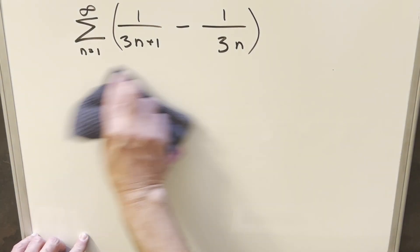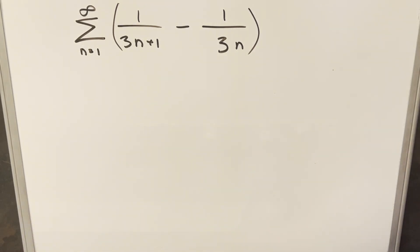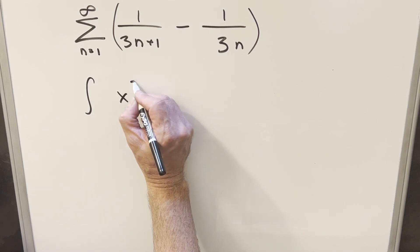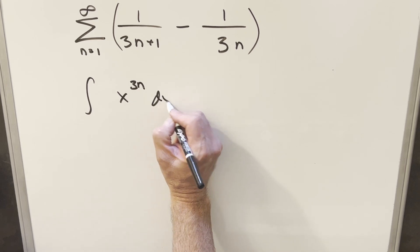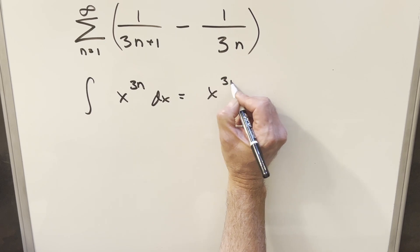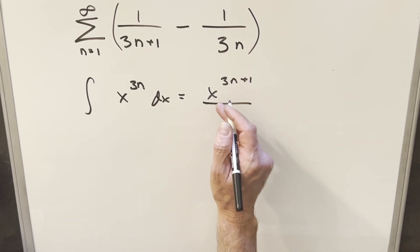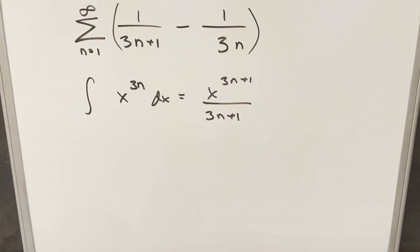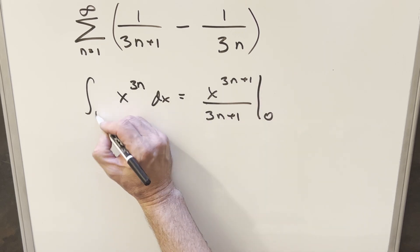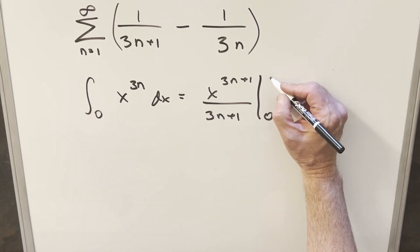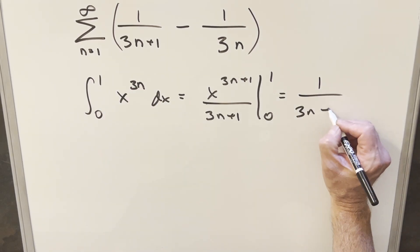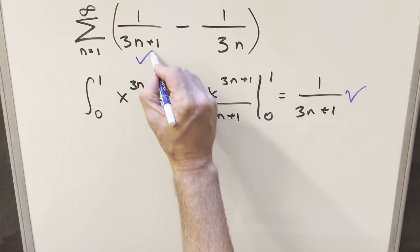What I want to do instead is look at each of these as an integral. For example, if I create the integral of x to the 3n dx from 0 to 1, integrating by the power rule gives x to the 3n plus 1 over (3n plus 1). Evaluating at zero gives zero, so the upper bound determines the value. Evaluating at 1, this whole thing gives exactly 1 over (3n plus 1).